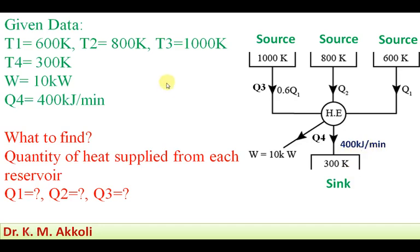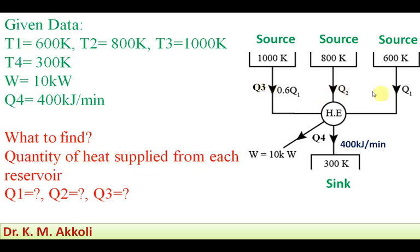The given data are: T1 = 600 Kelvin, T2 = 800 Kelvin, T3 = 1000 Kelvin, and T4 = 300 Kelvin (the sink temperature). The work output W = 10 kW is given, and the heat rejected Q4 = 400 kJ per minute. What we have to find are the quantities of heat supplied from each reservoir — Q1, Q2, and Q3.